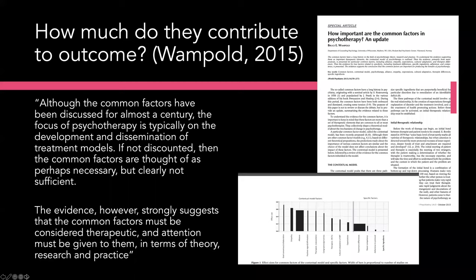There's lots in the literature over the years about common factors and how important they are, and many modalities post on this frequently. But one of the things really important to note is that the research quality can be very poor. When we look across common factor literature, we need to understand whether research has managed for other effects — the specific factors and individual therapist factors — and a lot of the research that's been done is poorer quality than others.